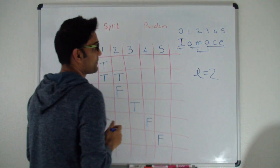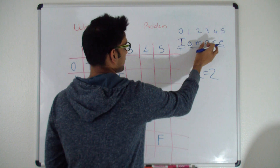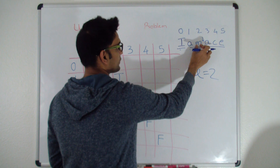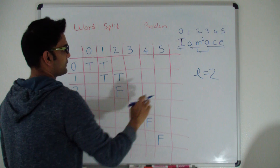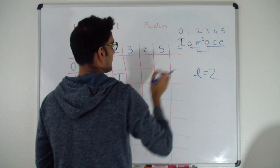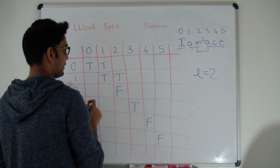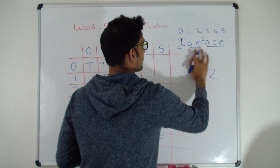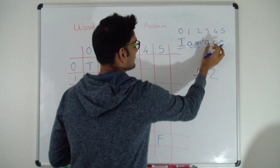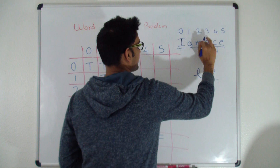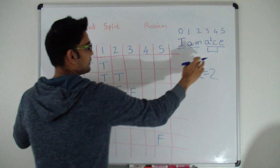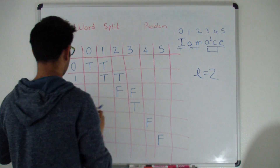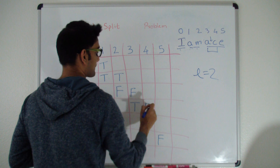Let's look at 'MA' — it does not belong in the dictionary. We try to split it: (2,2) is false, so that split doesn't work, and (2,3) is false. For 'AC': it doesn't belong in the dictionary either. We try splitting — A is true at (3,3) but C is false at (4,4), so (3,4) is false.